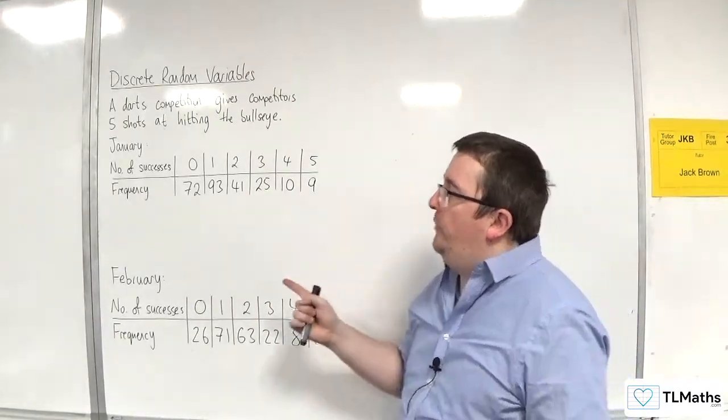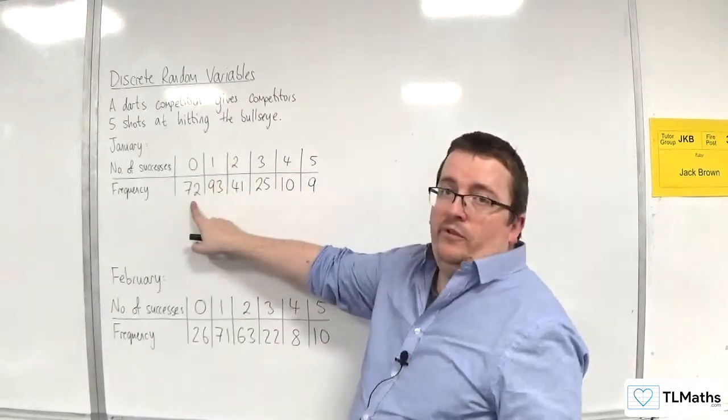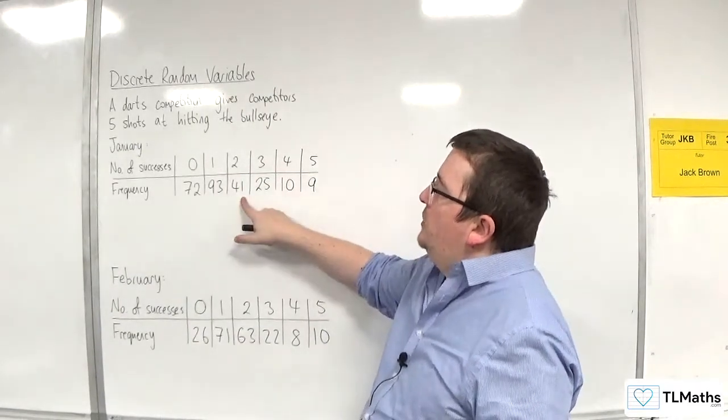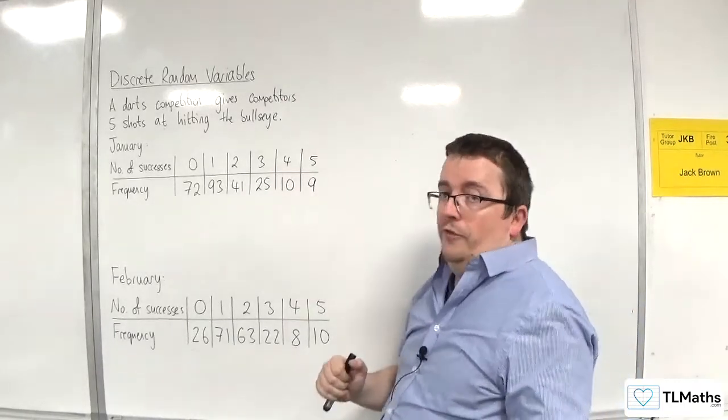This table tells you how many people got zero bullseyes—there are 72 of those. 93 got one bullseye out of five, 41 got two, 25 got three, 10 got four, and 9 got five.